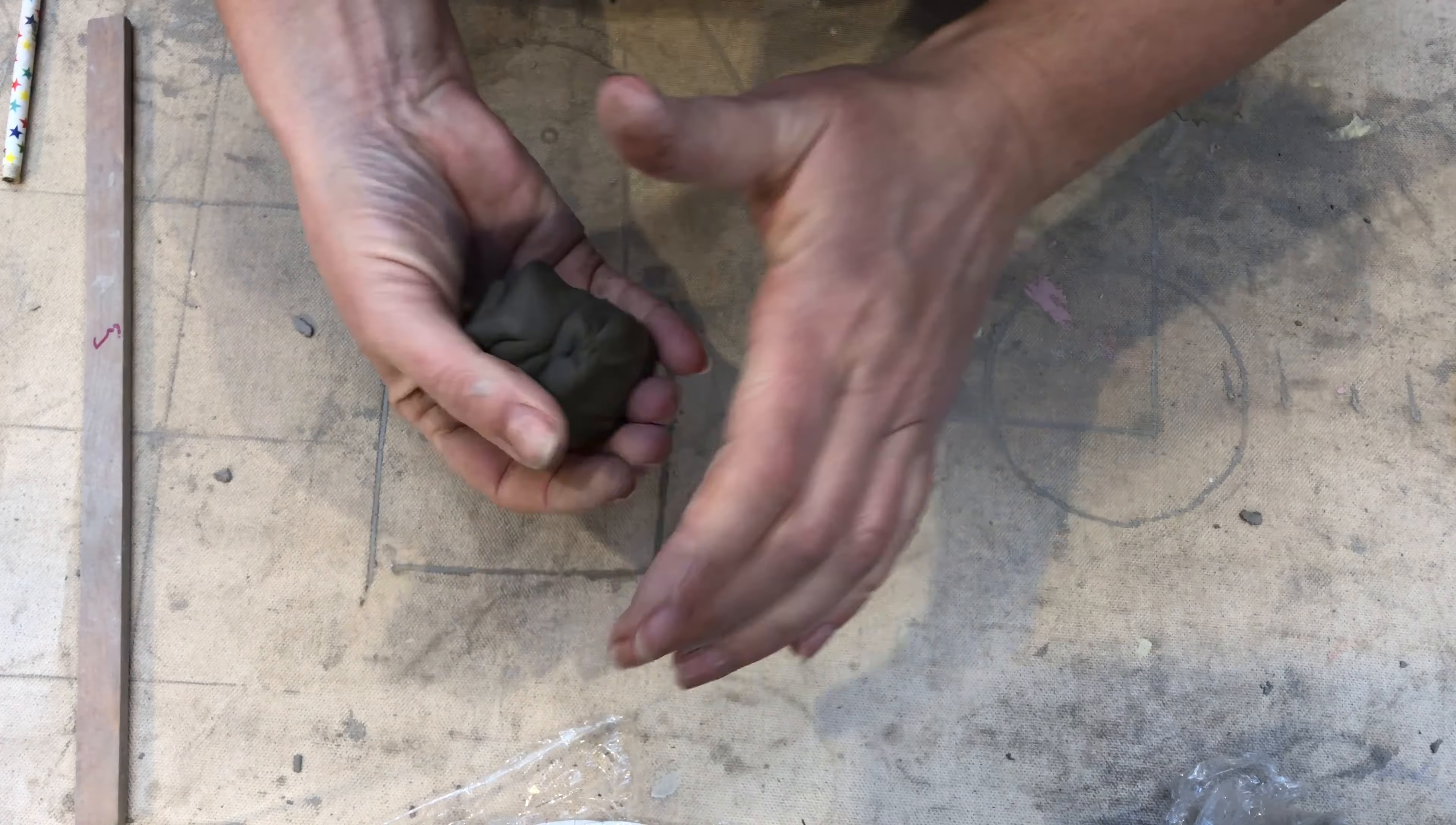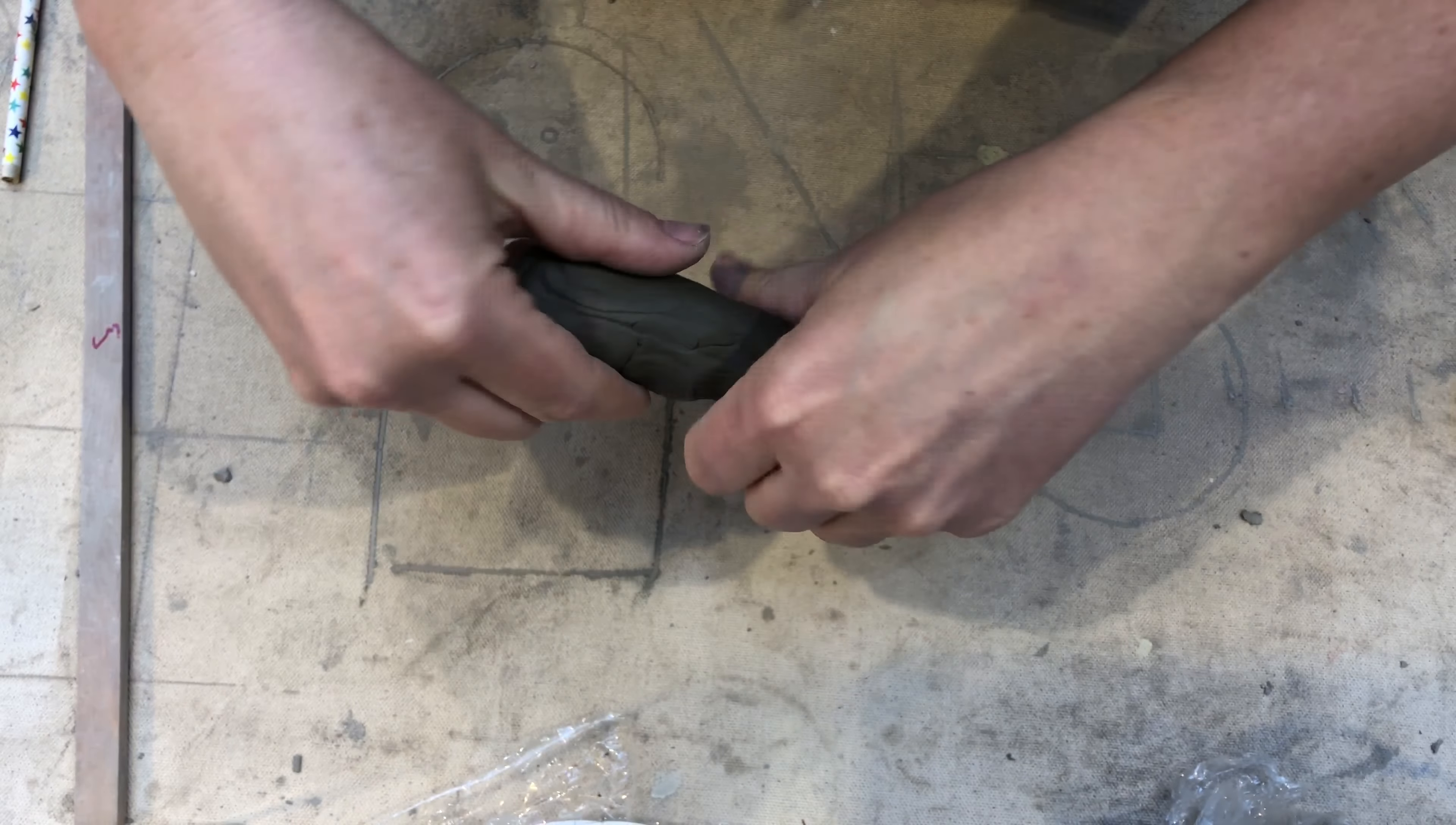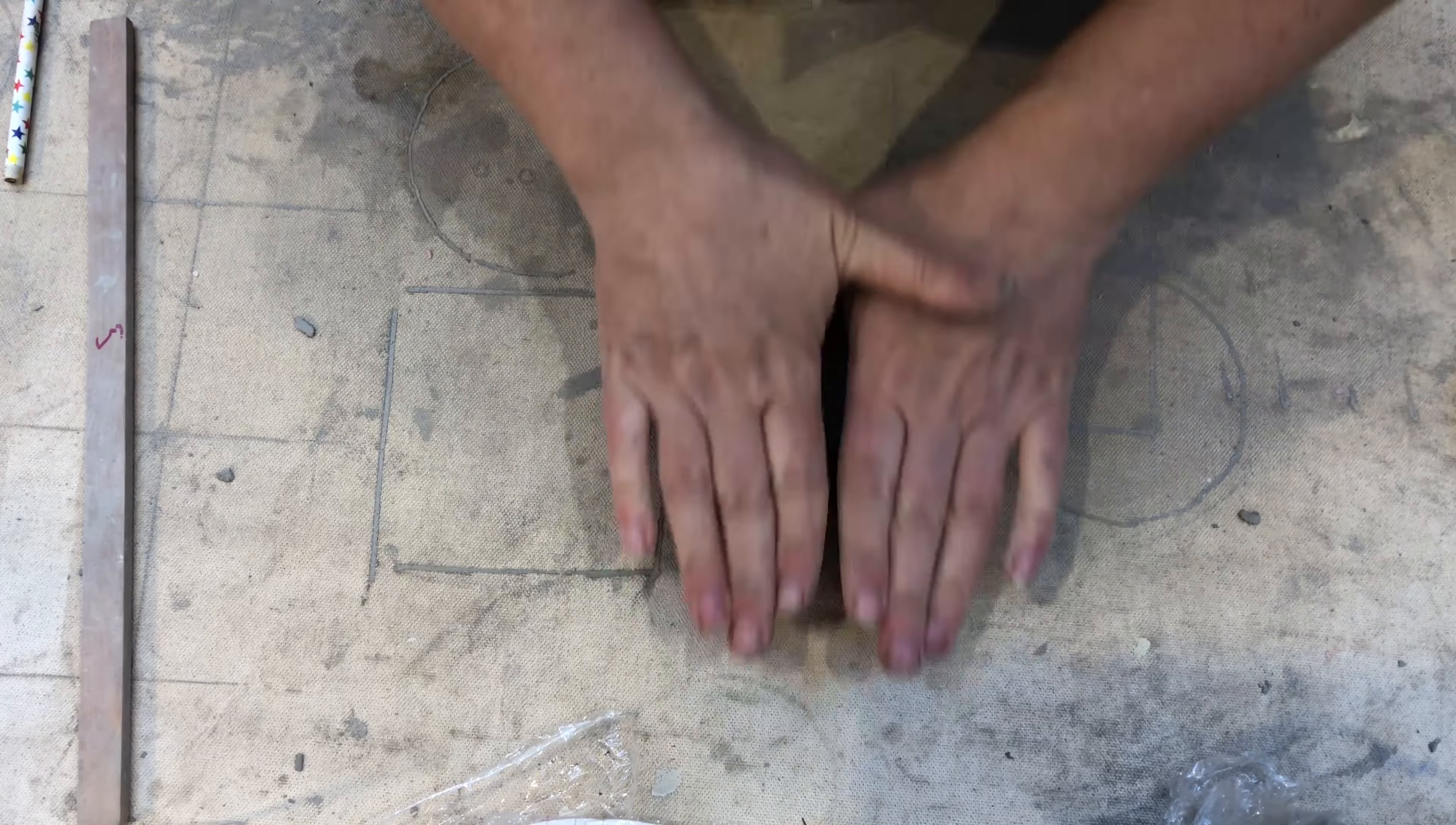Day two we're going to make the feet. So with the remaining clay you roll it into a long coil sausage shape, gently rolling it backwards and forwards.